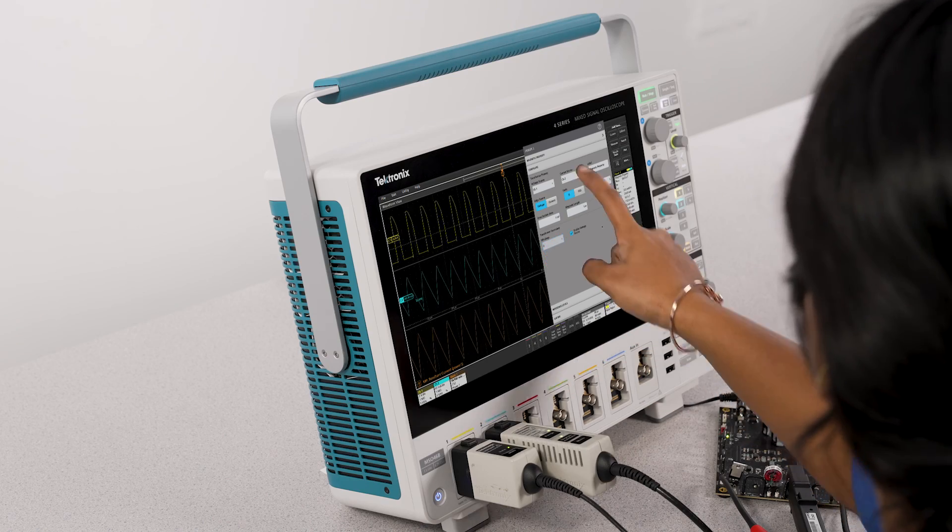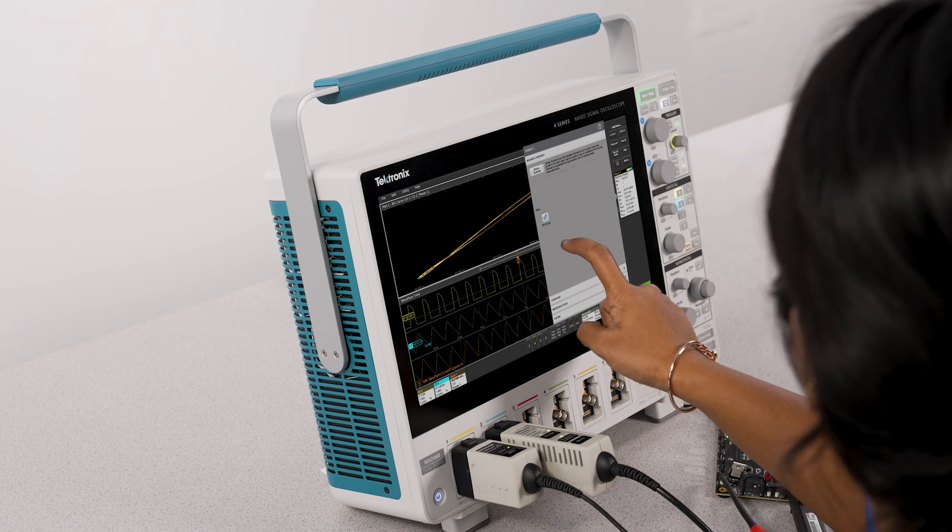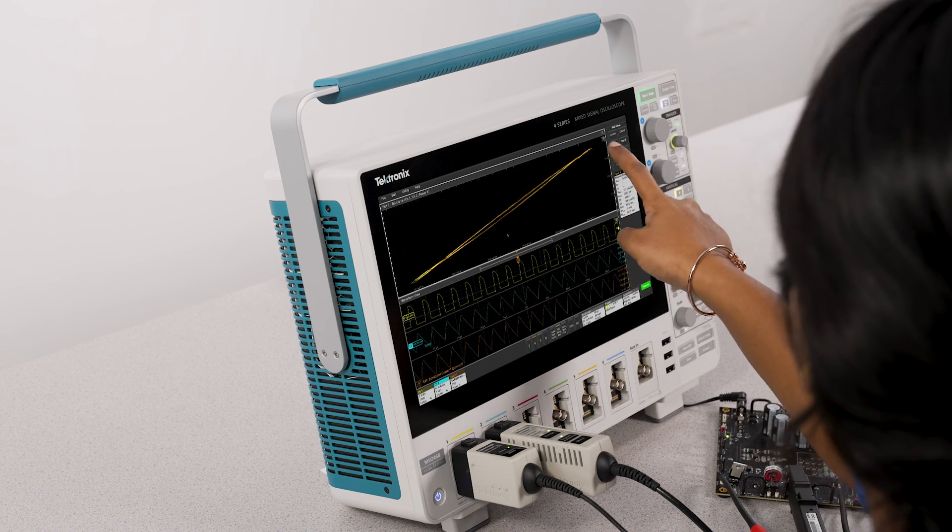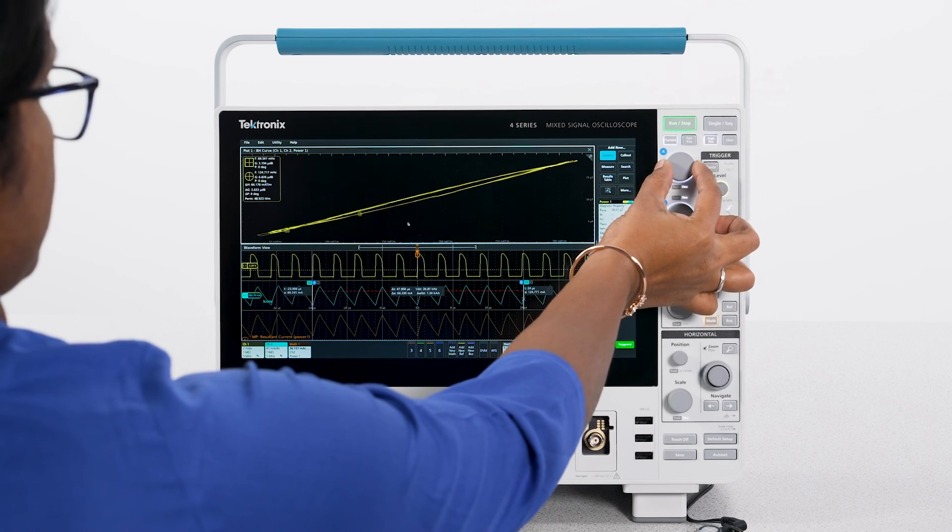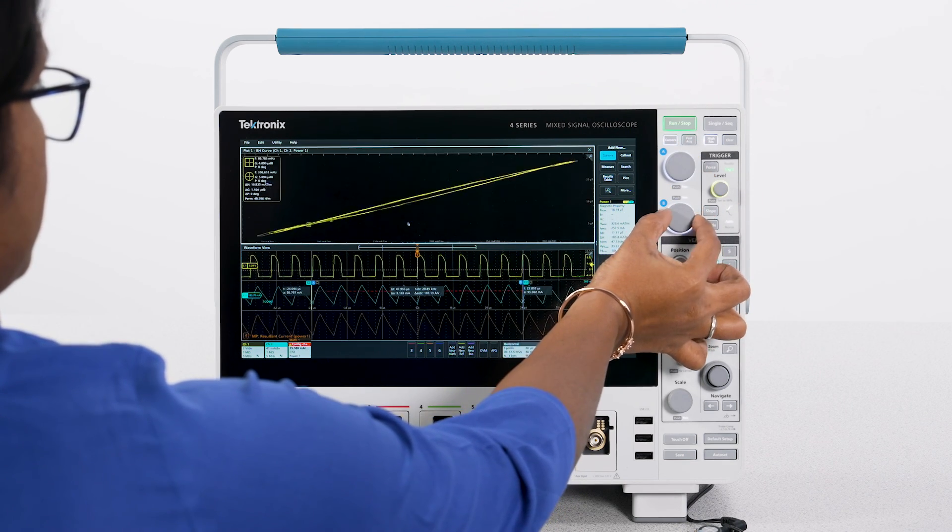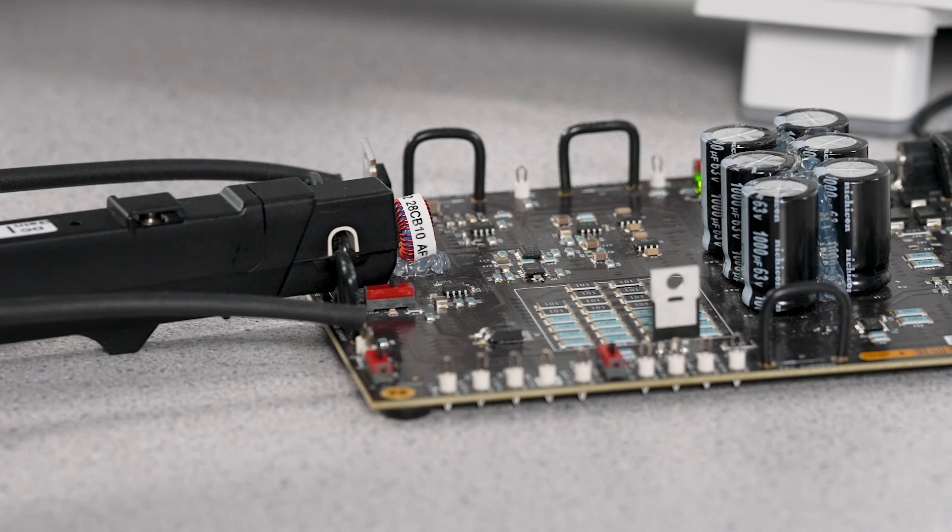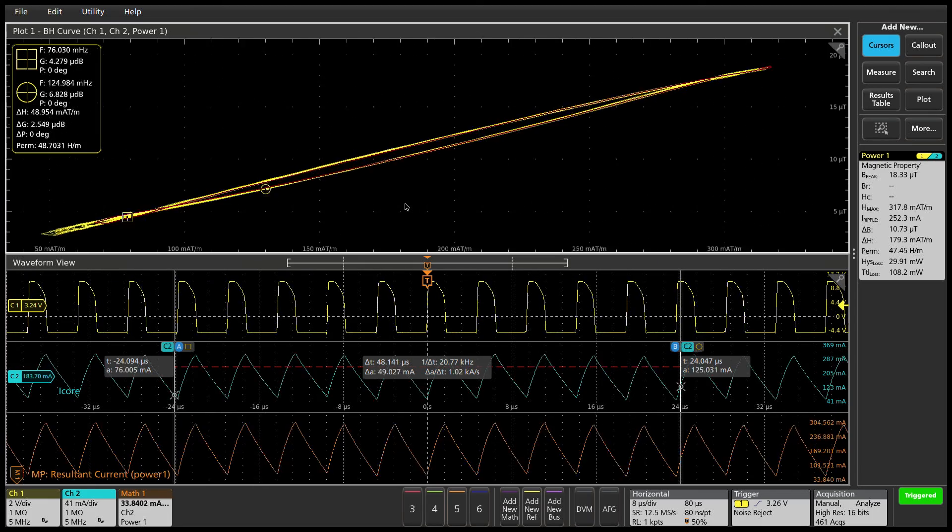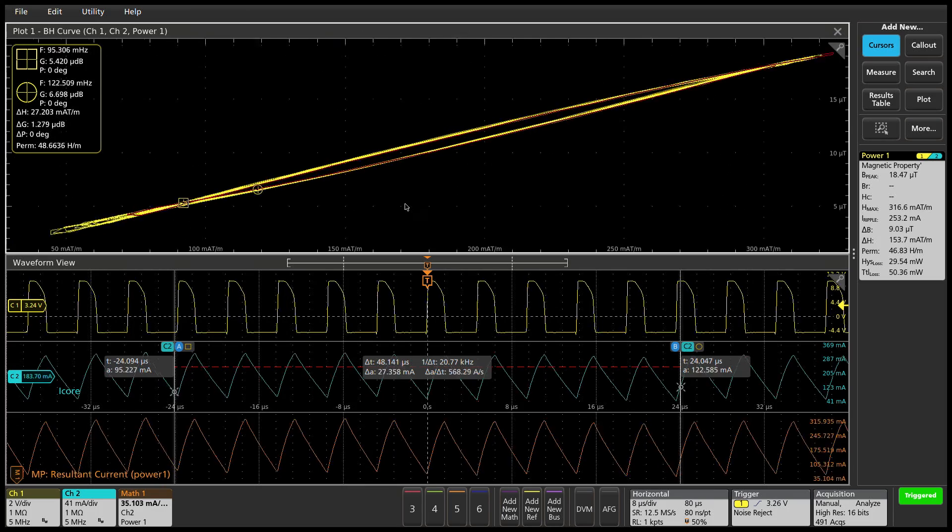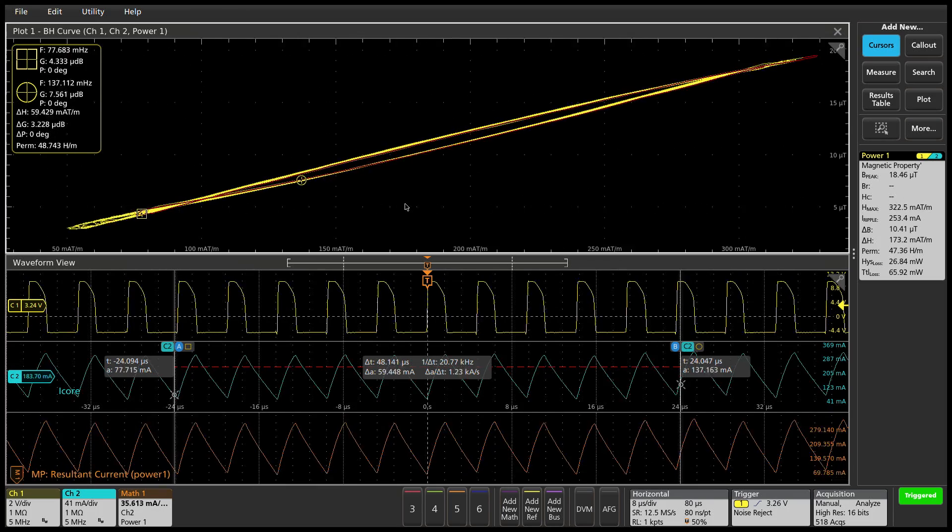BH plots are often used to verify the saturation of the magnetic elements in a switching supply and provide a measure of the energy lost per cycle in a unit volume of core material. In this power supply, the inductor isn't being driven very hard. The advanced power measurements and analysis software measures the voltage across the magnetic element and the current flowing through it and plots B versus H.